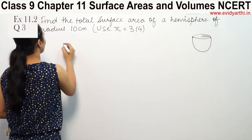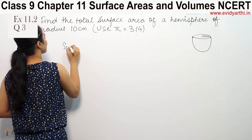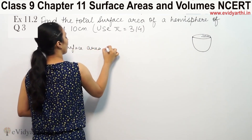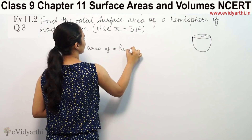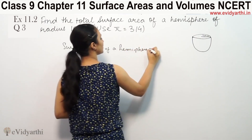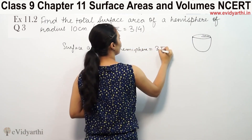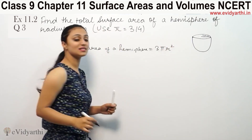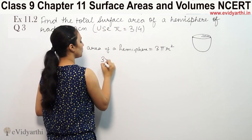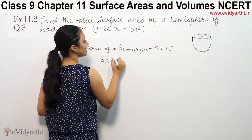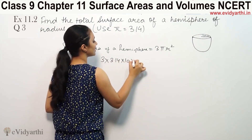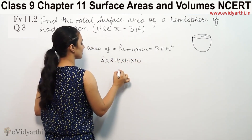So the surface area of a hemisphere equals 3πr². This is the formula for the surface area of a hemisphere. So 3 into π — the value of π is 3.14 — and the radius is 10, multiplied by 10.